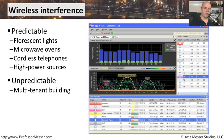Sometimes the interference that shows up is nothing you could have ever planned for. Especially in a very large building with many different tenants, every single one of those tenants may want their own wireless network. The person in the room next to you could turn on a brand new access point that is misconfigured or configured in a way that conflicts with your existing access points, and now nobody's network is going to work very well.